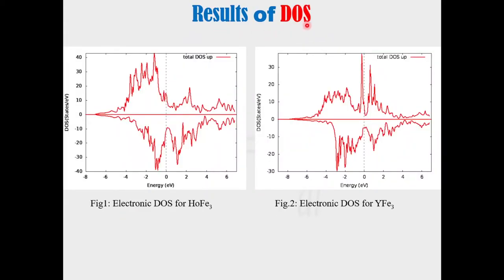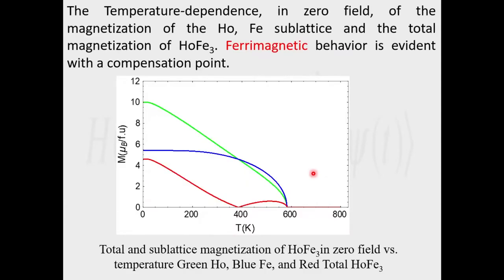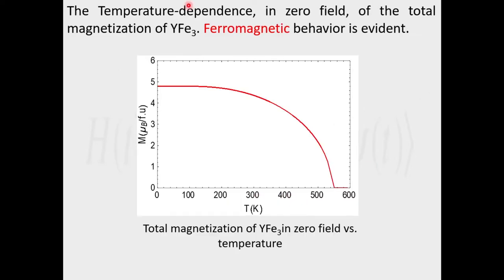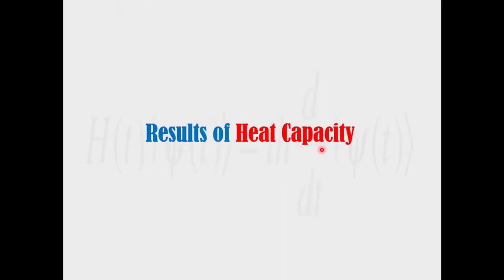The results. First, the results of density of states: we calculated the electronic density of states of both holmium iron-3 and yttrium iron-3 to get the density of states at the Fermi level needed in our calculation. The results of magnetization show the temperature dependence in zero field of holmium iron-3, with a compensation temperature of 395 Kelvin, and the total magnetization of yttrium iron-3 shows ferrimagnetic behavior.